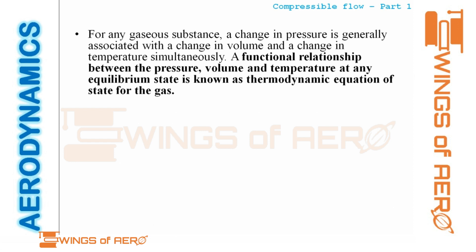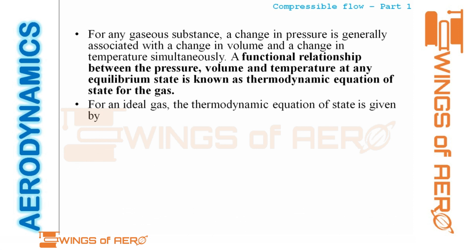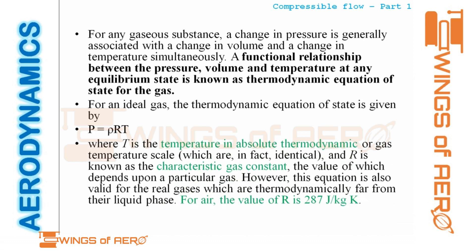Now, the thermodynamic equation of state for an ideal gas: P equals rho R T, where T is the absolute temperature and R is the characteristic gas constant. For air, the value of R is 287 joules per kg·Kelvin — you must remember this value.